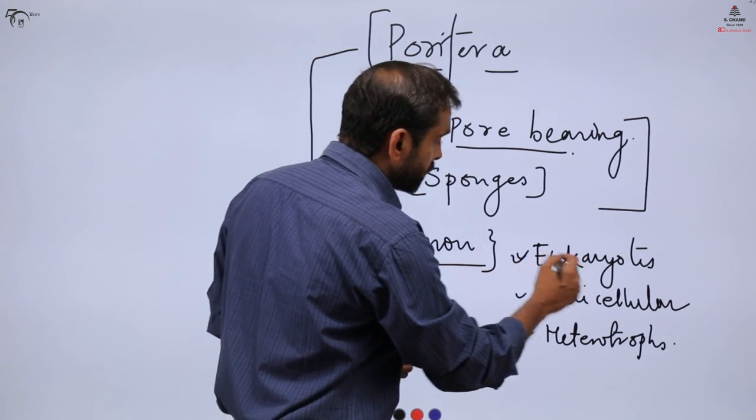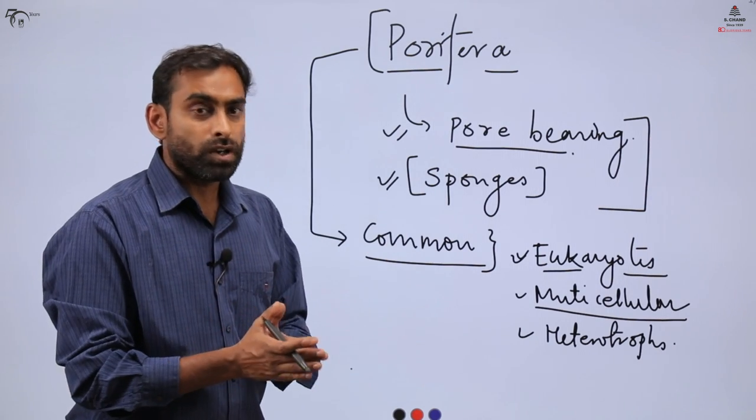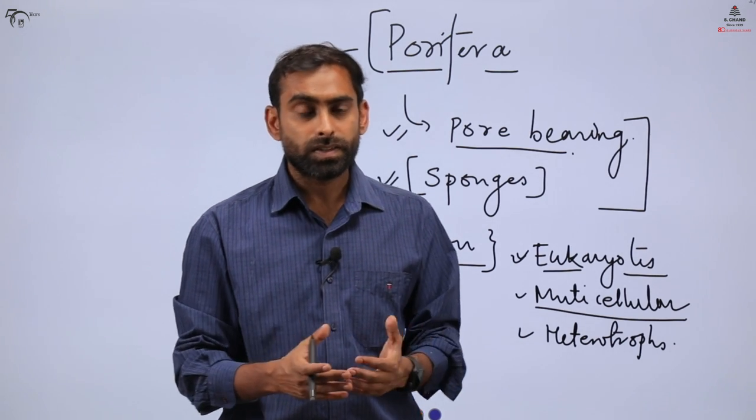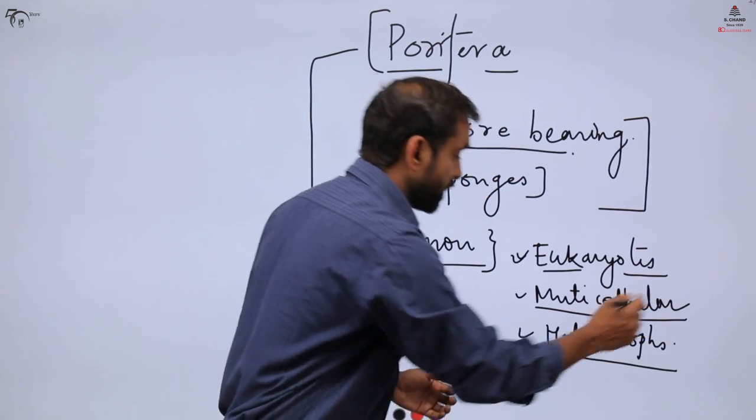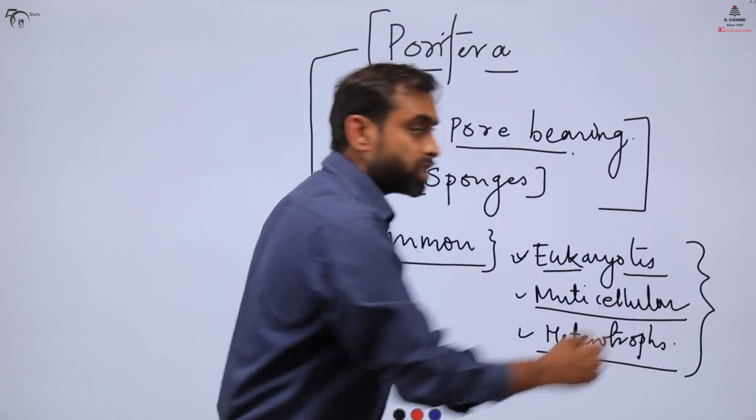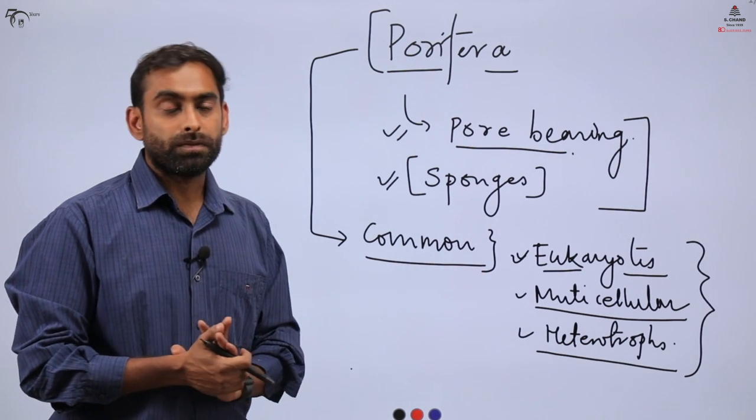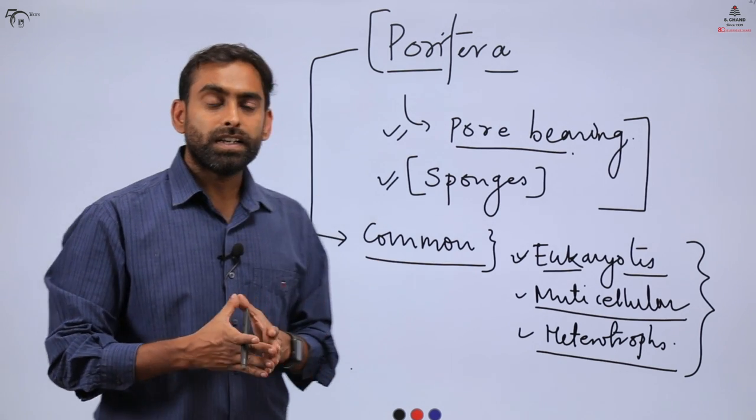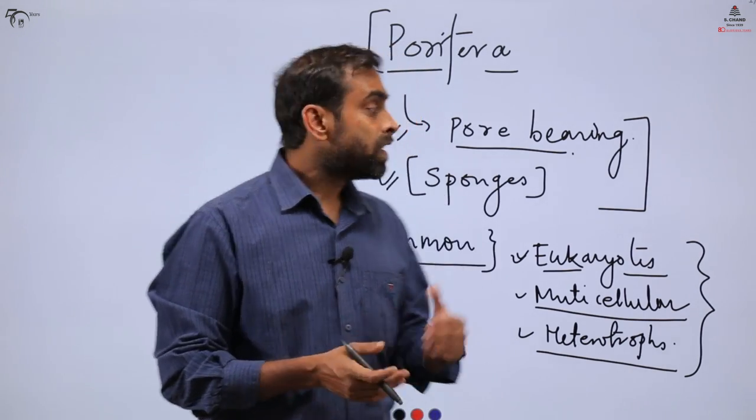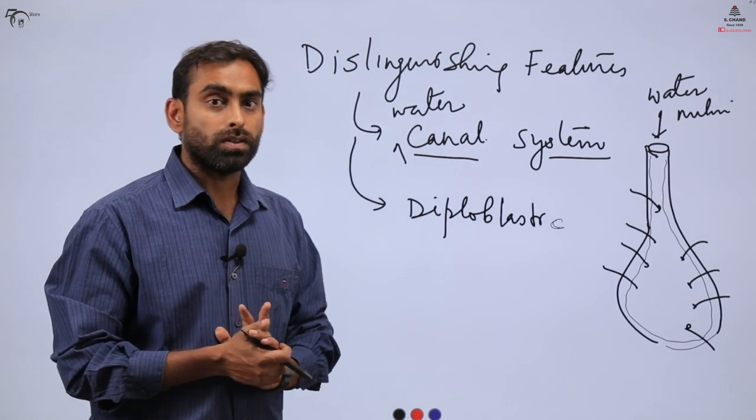Among the common features are that they are eukaryotes - they have a true nucleus in their body. They are multicellular, made of many cells, and these cells are arranged in tissue level of organization. That means there are variety of cells which can do different functions. And the most important thing is they are heterotrophs, that's why they have been placed in kingdom animalia. So these three features are shared with all other phylums which we are going to discuss in coming videos.